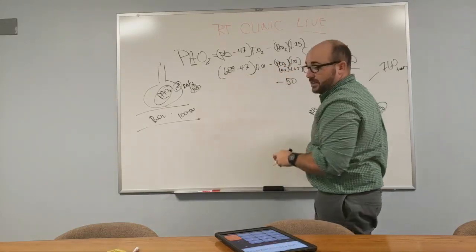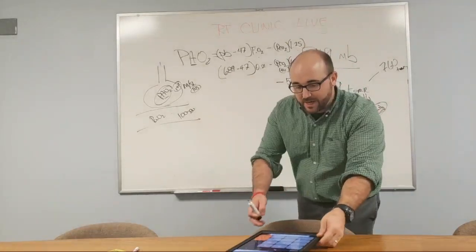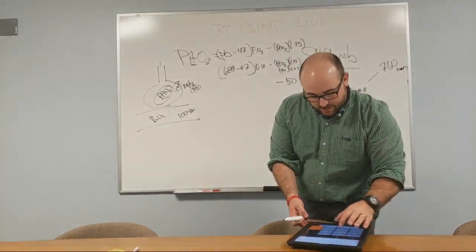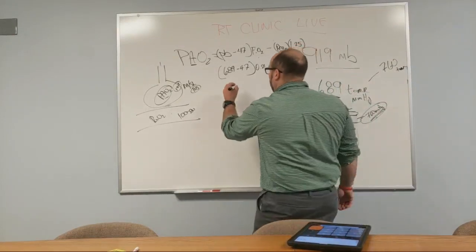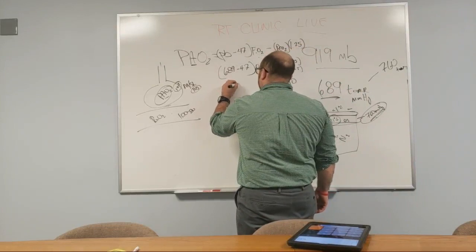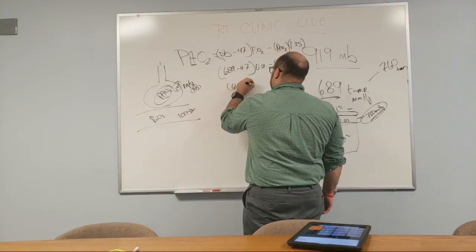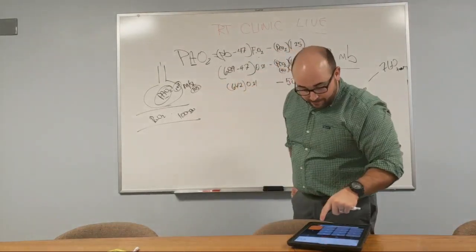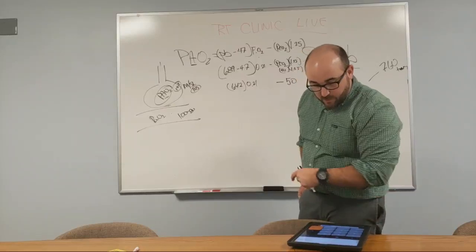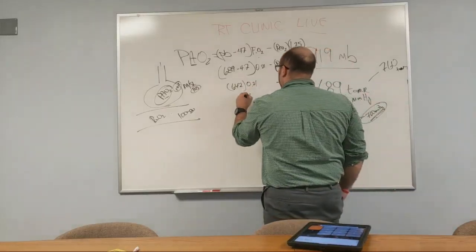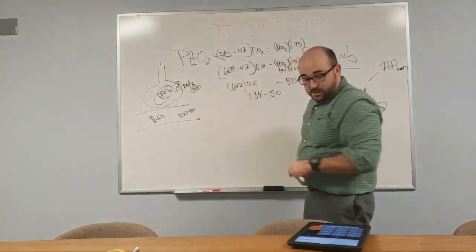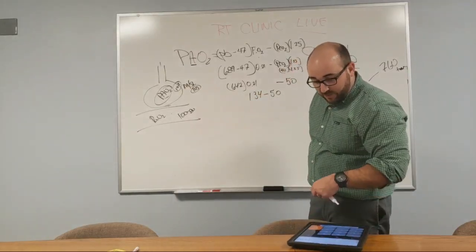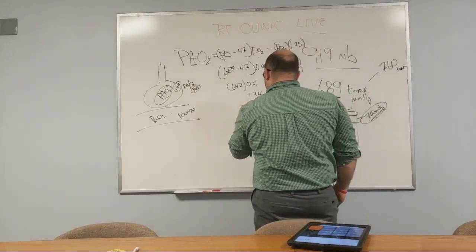So we're going to figure this other side over here. So 689 minus 47 equals 642, times 0.21 equals 134. Okay, so 134 minus 50 equals 84.